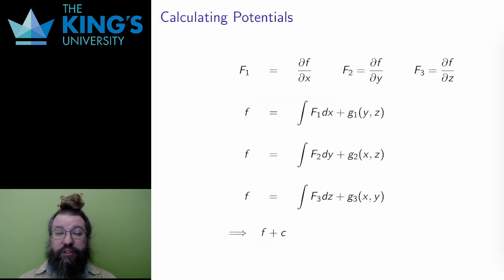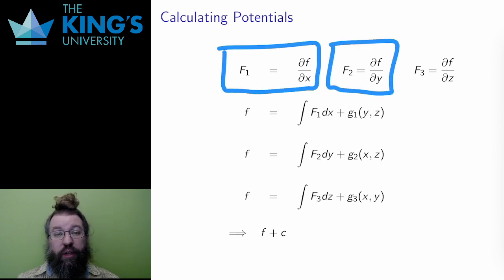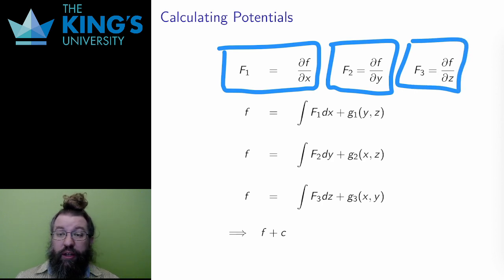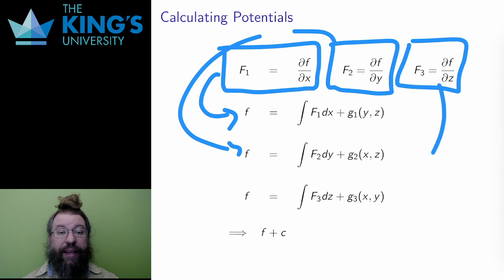If a vector field is conservative, it is the gradient of a potential. I want to know what the potential is, where it comes from. So let me write down the components of the gradient. Capital F1 is the x-derivative of the potential. Capital F2 is the y-derivative of the potential. And capital F3 is the z-derivative of the potential. This means to solve for little f, I have to solve three differential equations. Thankfully, these are not impossible DEs. I just integrate F1 in x, F2 in y, and F3 in z.